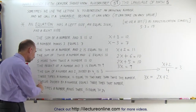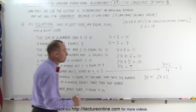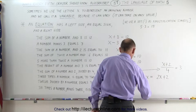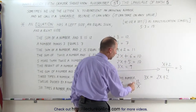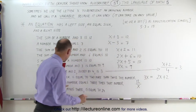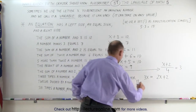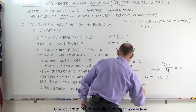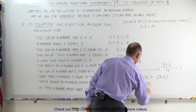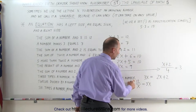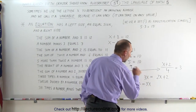The next sentence says: 12 divided by a number equals 3 times that number. We take the number 12 and divide it by the unknown number x. So 12 divided by x equals 3 times x: 12/x = 3x.